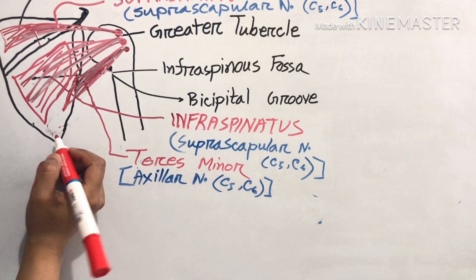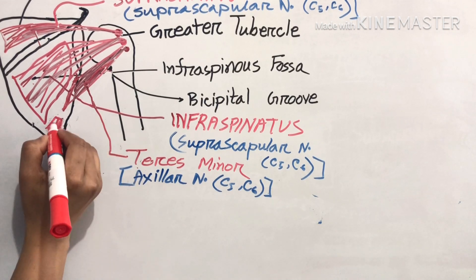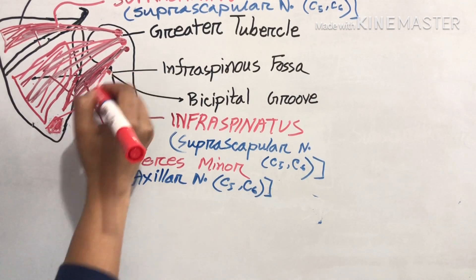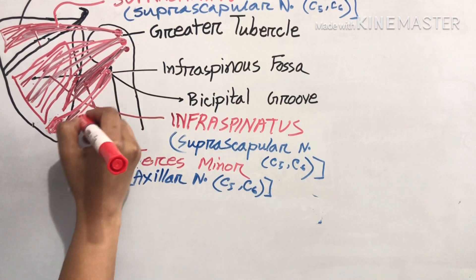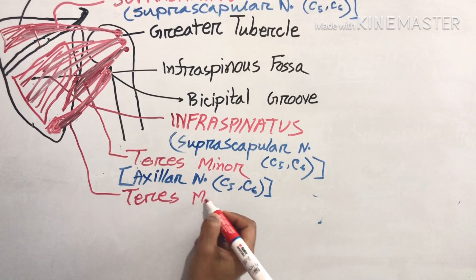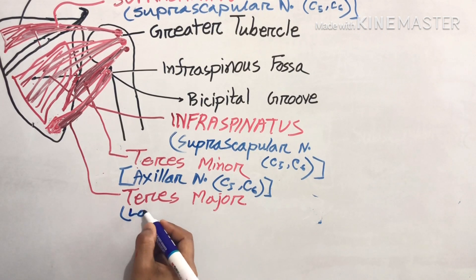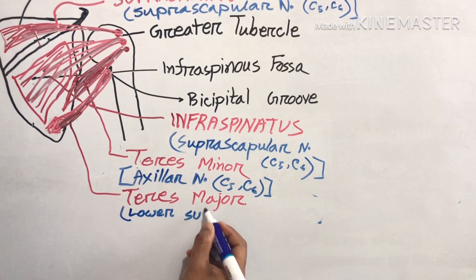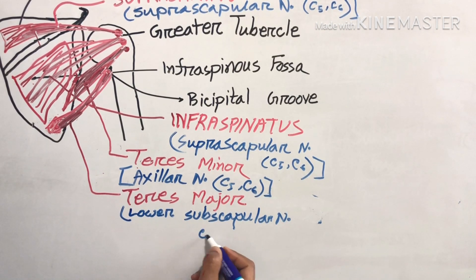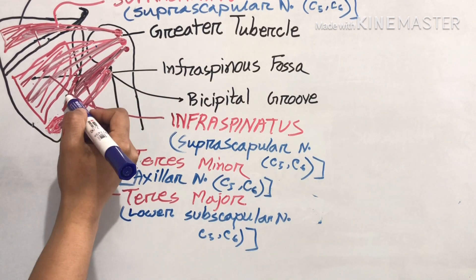Now we will see the teres major muscle. Its origin is from the lower one-third of the dorsal surface of the lateral border and inferior angle of the scapula, and its insertion is into the medial lip of the bicipital groove. Teres major is supplied by the lower subscapular nerve from C5, C6.